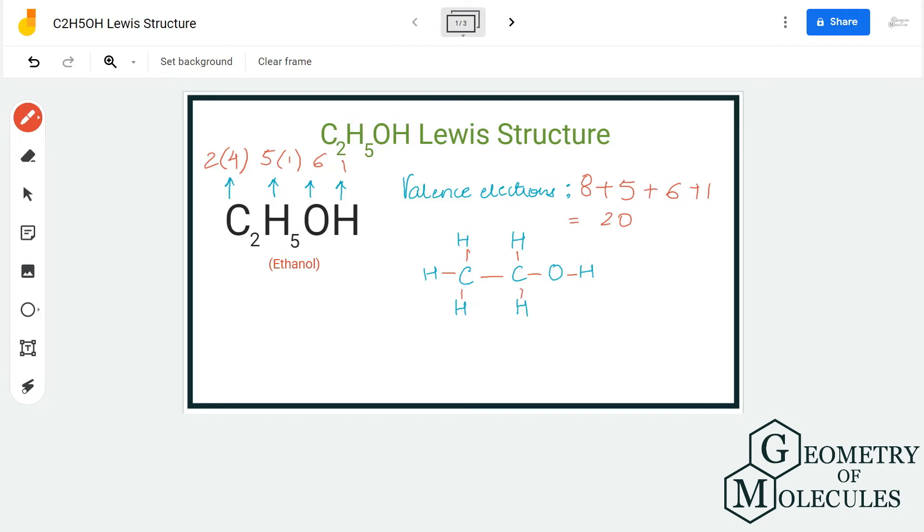And we are going to place bonds between two atoms, and each bond takes up two valence electrons. So in total we are placing eight bonds over here, which is taking up 16 valence electrons out of 20, and now we are only left with four valence electrons.